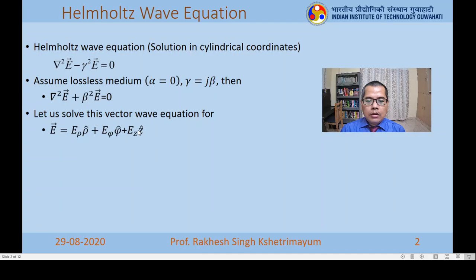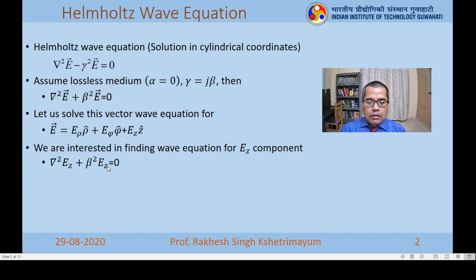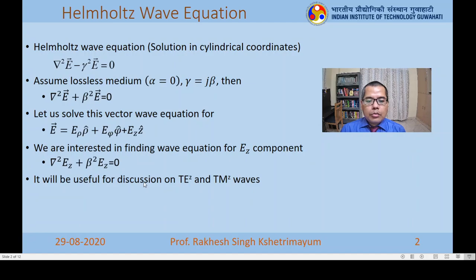We want to solve this wave equation for E-z and H-z because we are typically interested in waves called TE-z or TM-z waves. The waves we consider are usually either TE or TM waves propagating along the z-axis, and we are interested in either the transverse electric or transverse magnetic components.